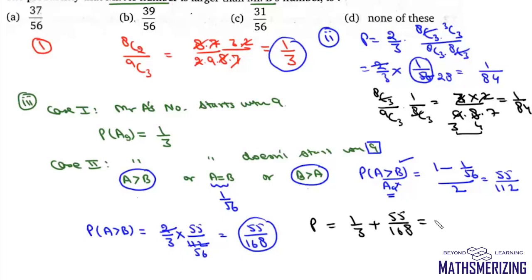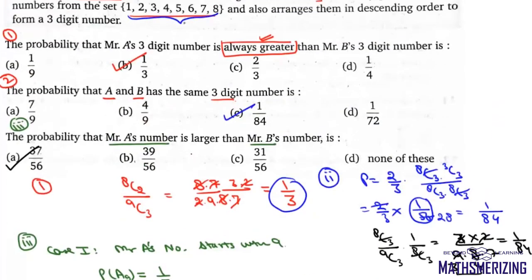So the probability that A's number will be greater than B's is 1/3 + 55/168 = 37/56, which is option A. The correct options are B, C, and A.